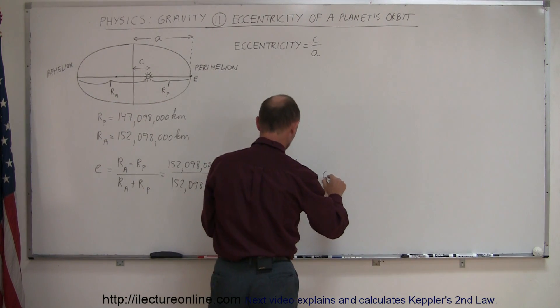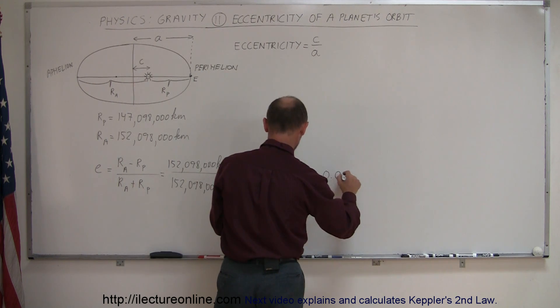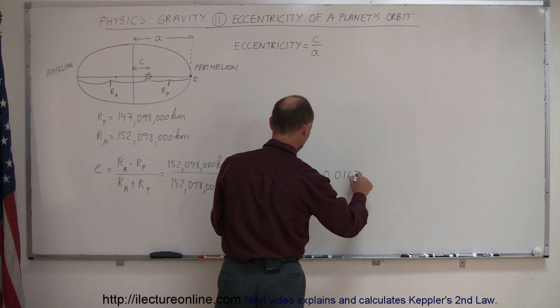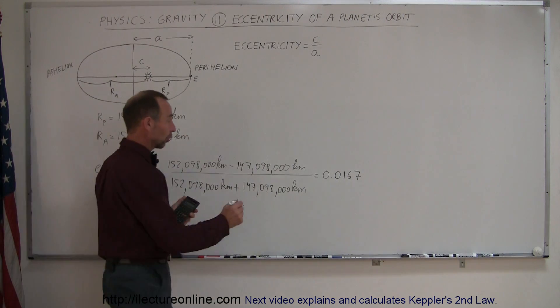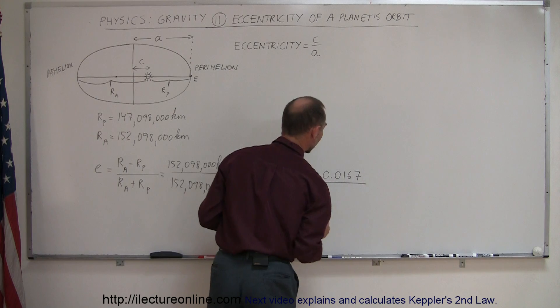And we get 0.0167. So that is the eccentricity of the earth's orbit, 0.0167.